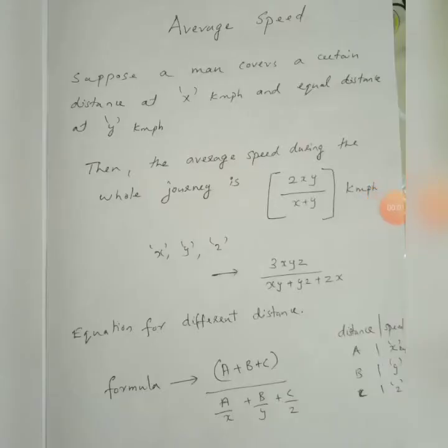Next we will see the equation for average speed. In this particular case we need to see two different scenarios. One is a person travelling equal distance, and second is a person travelling different distances. For the first case — a person travelling equal distance — suppose a man covers a certain distance at x km per hour and an equal distance at y km per hour. The average speed becomes 2xy divided by x plus y.